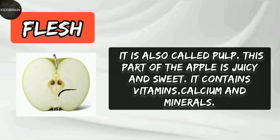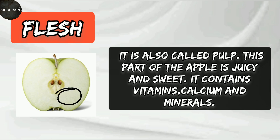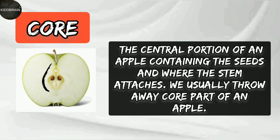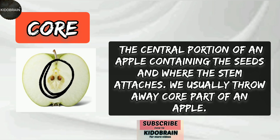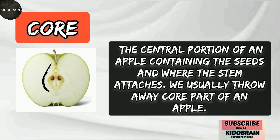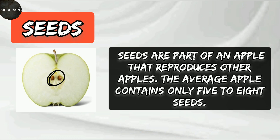Flesh: it is also called pulp. This part of the apple is juicy and sweet. It contains vitamins, calcium, and minerals. Core: core is the central portion of an apple containing the seeds and where the stem attaches. We usually throw away the core part of an apple. Seeds: seeds are the part of an apple that reproduces other apples. The average apple contains only 5 to 8 seeds.